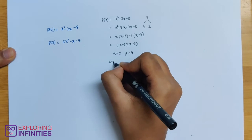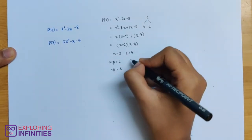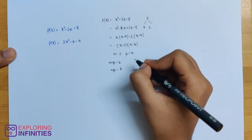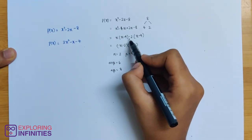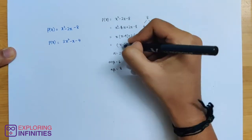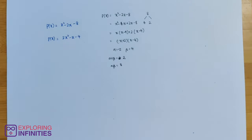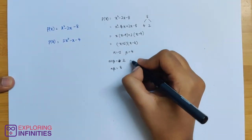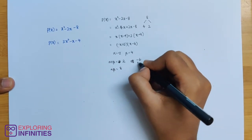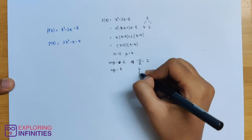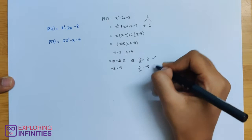Sorry, alpha plus beta is equal to 2, and alpha beta is equal to minus 8. This implies minus b by a equals 2, and c by a equals minus 8. So it is verified.